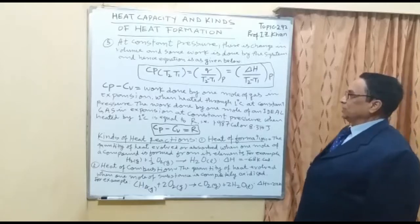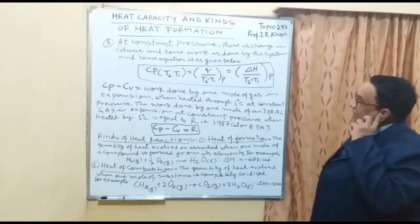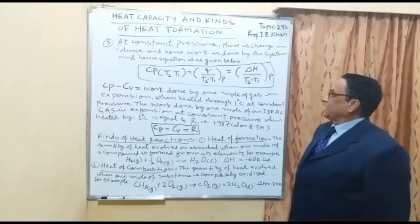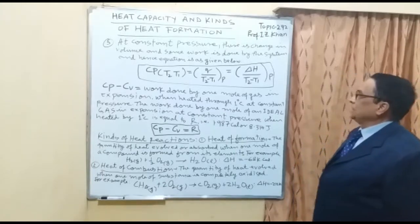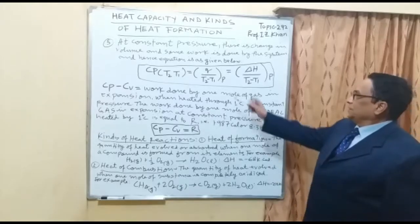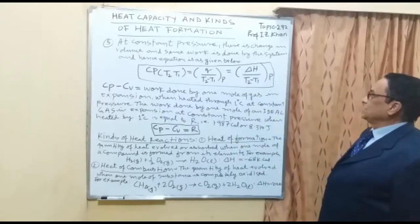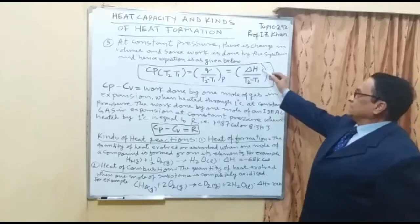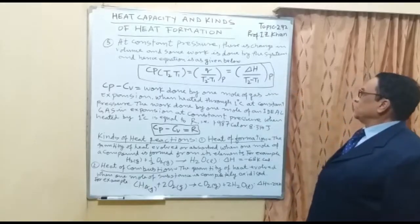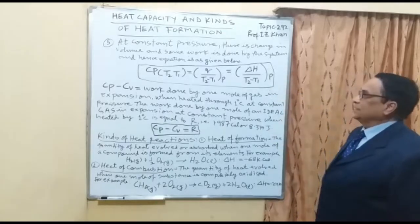The equation at constant pressure is: CP times (T₂ − T₁) equals Q over (T₂ − T₁) at constant pressure, which equals the enthalpy change delta H over (T₂ − T₁) at constant pressure.